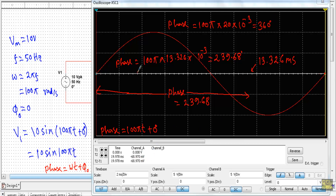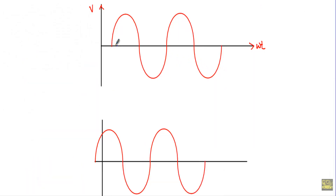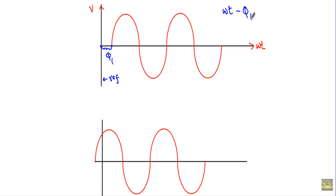This is how we calculate the phase of any alternating quantity at any instant. Now, if in the x-axis I am considering ωt and in the y-axis the voltage V, and the alternating quantity does not start from the zero reference position but instead starts φ₁ degrees behind it, then the angle traveled by this alternating quantity at any instant will be φ₁ less than the instantaneous phase. Therefore, we express the equation as: V = Vm sin(ωt − φ₁).